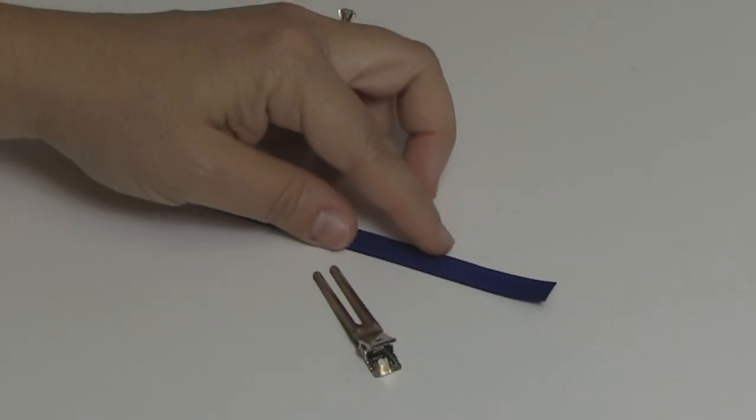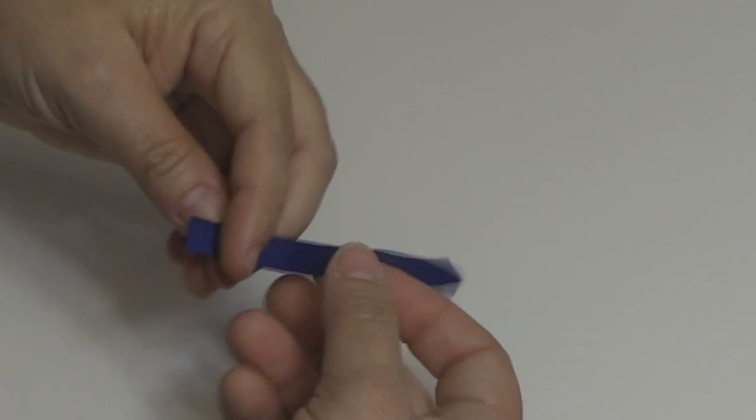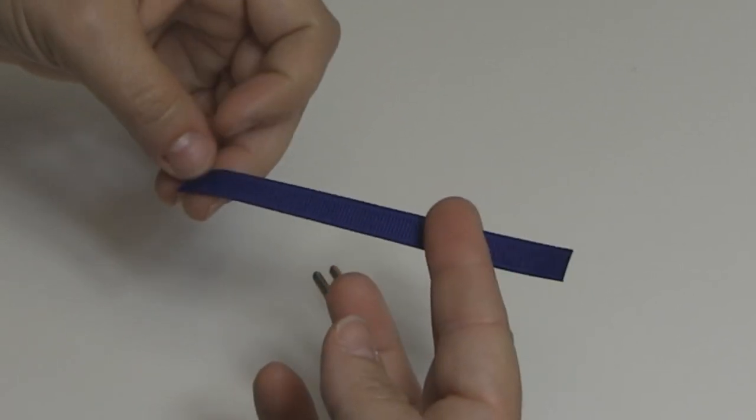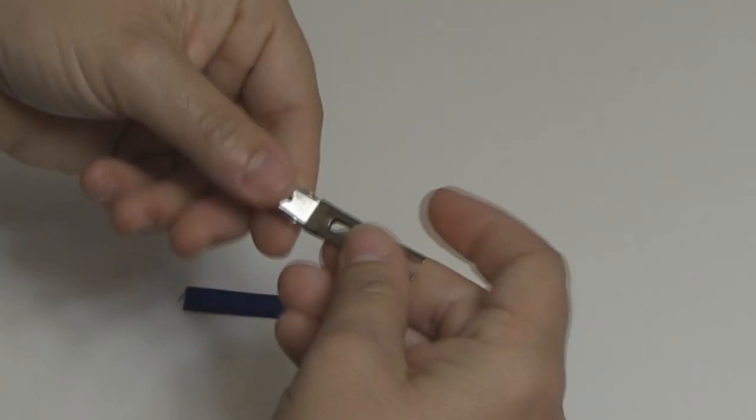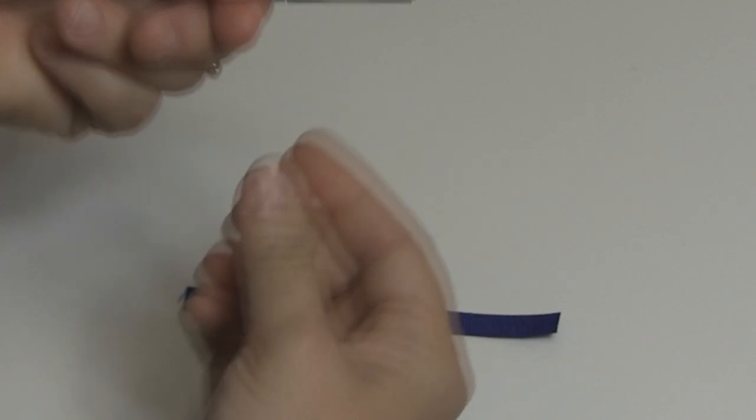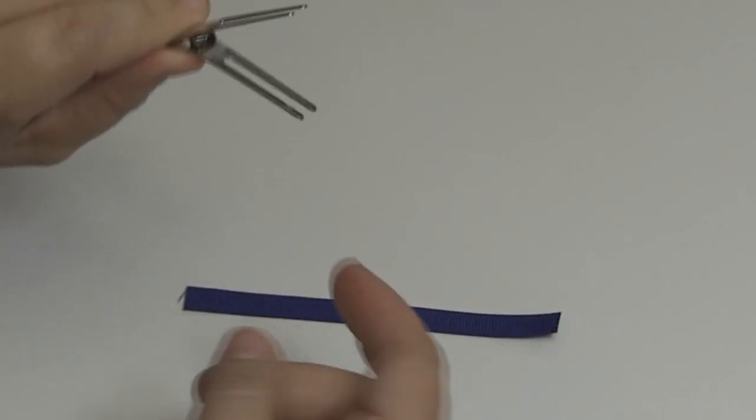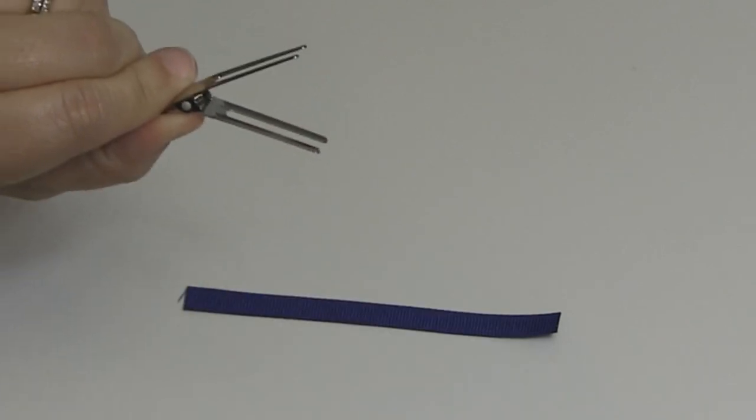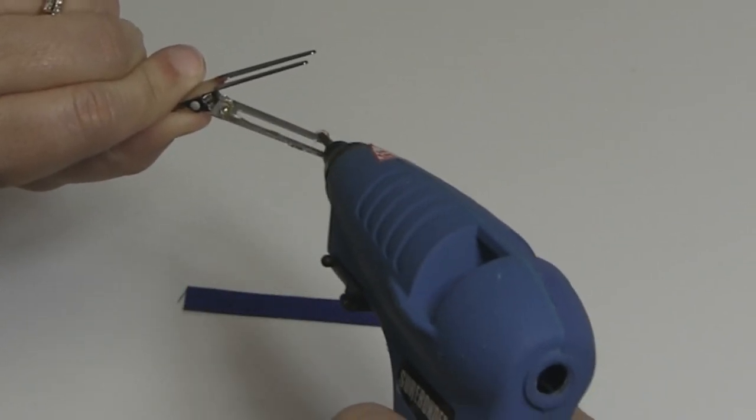The first step is going to be to line our alligator clip with our ribbon. So this is 4.5 inches of 3.8 inch wide ribbon. You're going to start by opening your clip. This is the top of your clip where the slant is. You're going to open it and flip it over and put some glue on the underside of the top part of the clip.